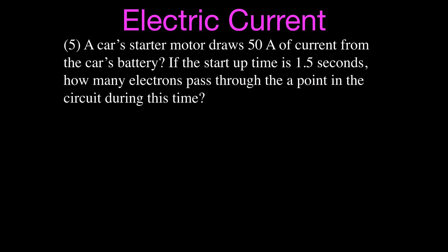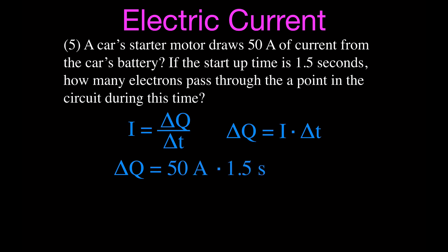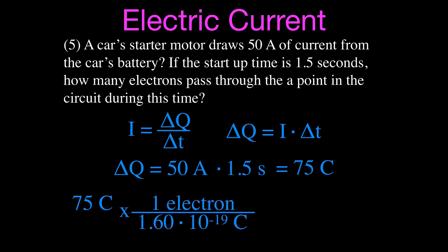We have a car's starter motor drawing a current of 50 amperes from the battery for 1.5 seconds. We want to know how many electrons flow. First we find the coulombs of charge: rearranging the equation gives delta Q equals current times time, so 50 amperes times 1.5 seconds equals 75 coulombs. We then divide by the charge on one electron (1.6 times 10 to the minus 19), and get that approximately 4.69 times 10 to the 20 electrons flow through the starter motor.